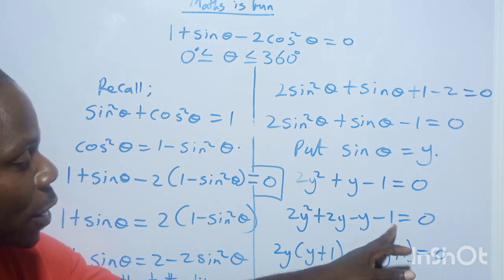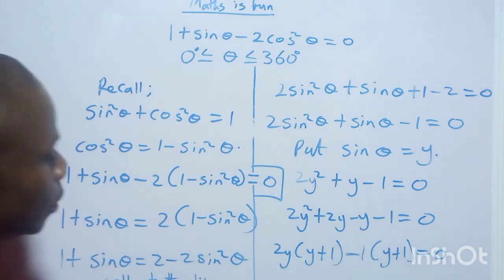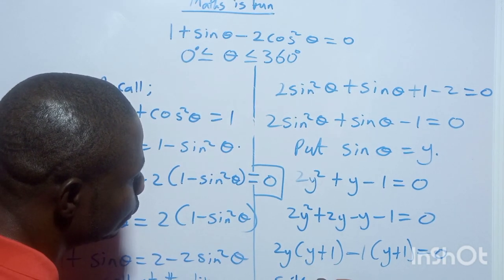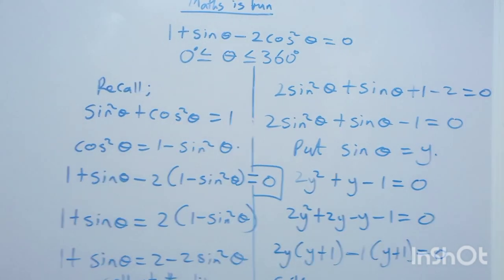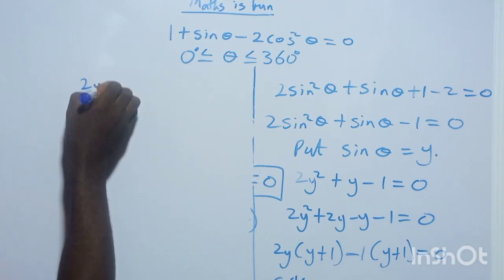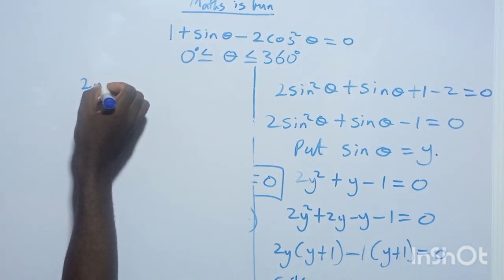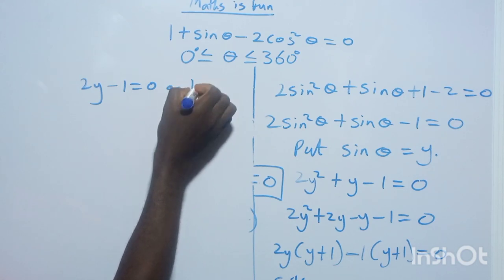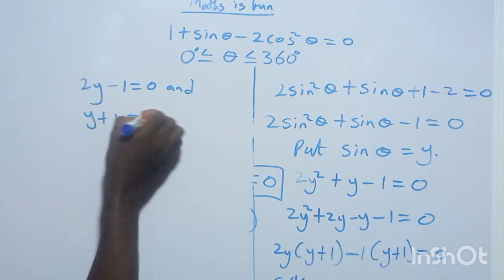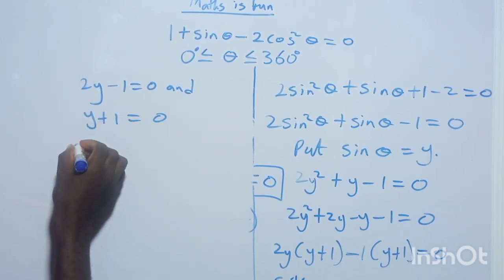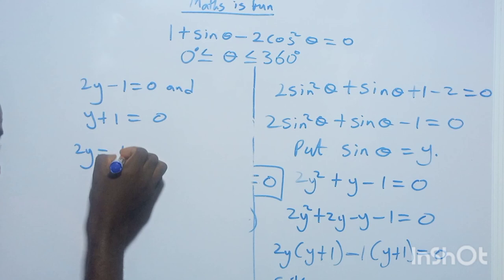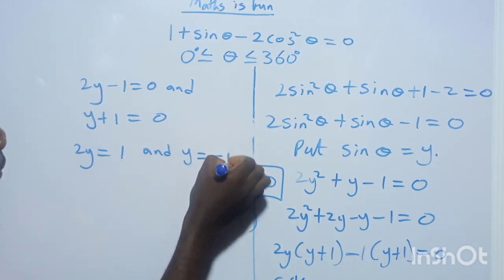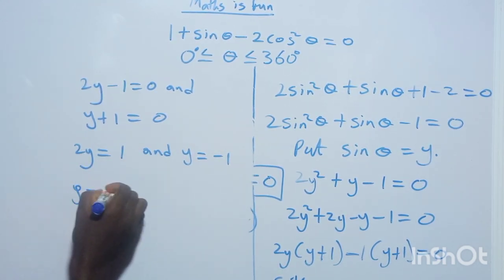So either 2y − 1 = 0 or y + 1 = 0. From 2y − 1 = 0, we get y = 1/2. From y + 1 = 0, we get y = −1.